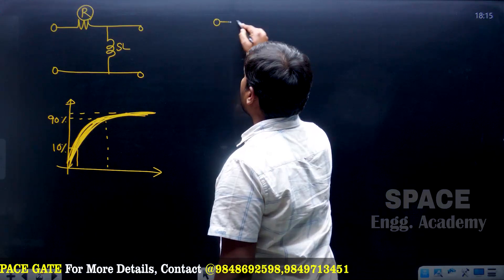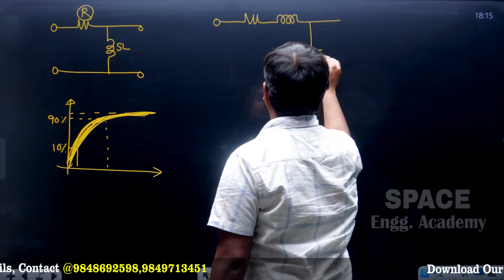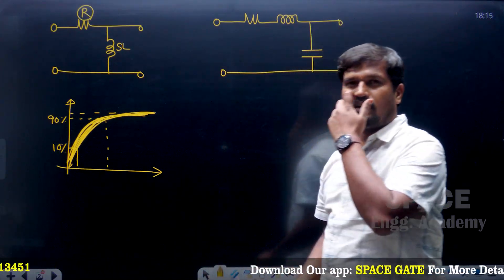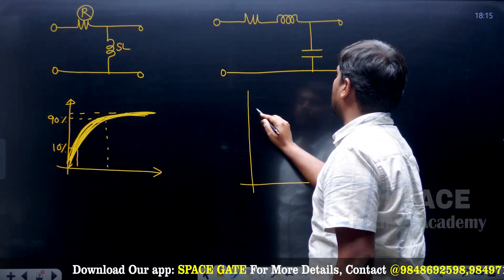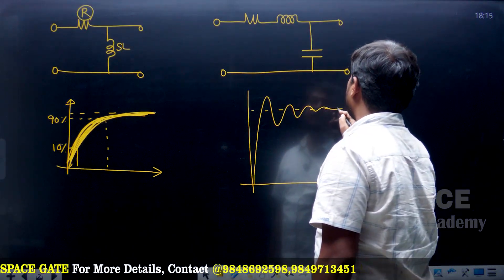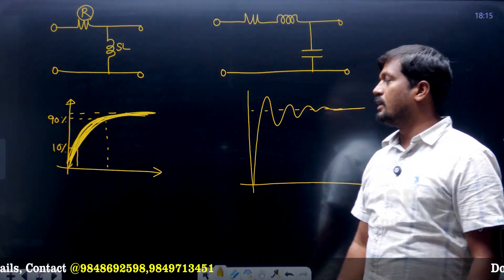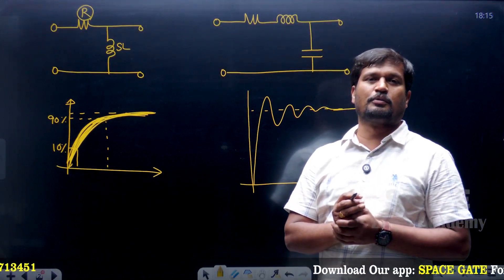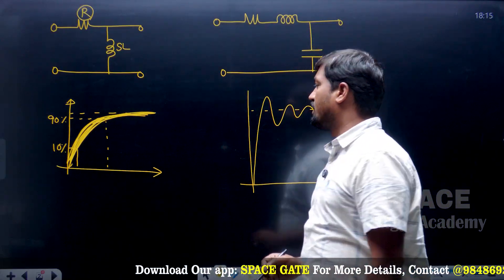Coming to the second-order system, we have two transient elements — that is L and C — along with a resistor. Whenever we have two transient elements, automatically the time response of the system is going to be oscillatory, as you may have studied in control system during your B.Tech. But nobody explained why the zeta value is in between 0.4 to 0.7, which is commonly asked in interviews. Let me explain that now.